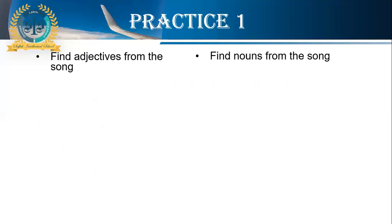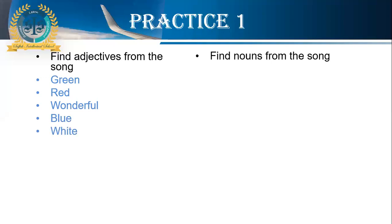We have to find adjectives from the song and find the nouns with which these adjectives are associated. From the song, I found: green (trees of green), red, wonderful, blue, white, bright, blessed, dark, scared, colorful, and pretty. These are the adjectives I found from that song.